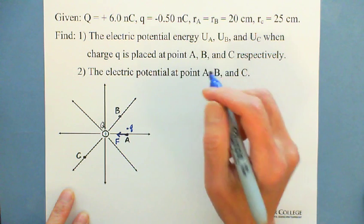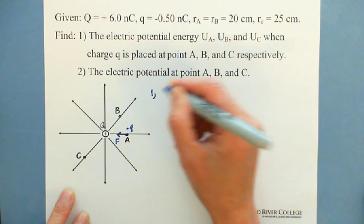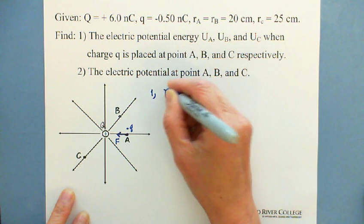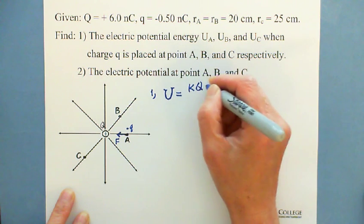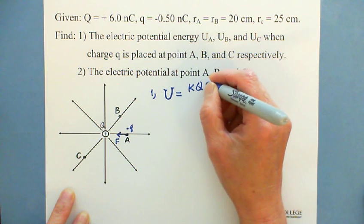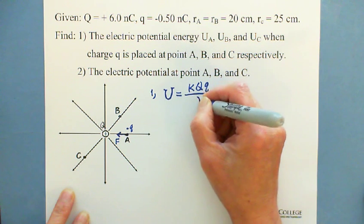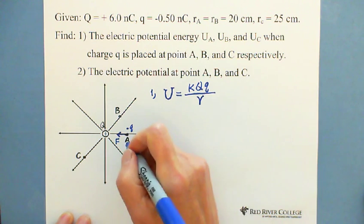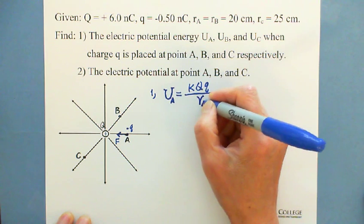The formula for electric potential energy is U equals K times big Q times small q, divided by the distance between the two charges. Because we're looking for point A, Ua equals kQq divided by Ra.